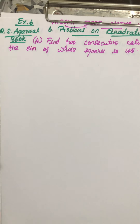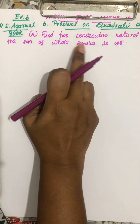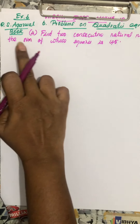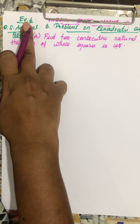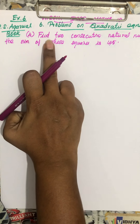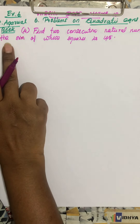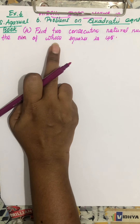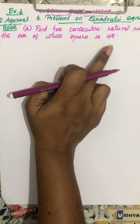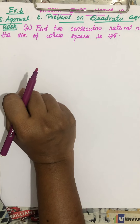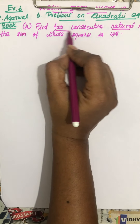Hi students, welcome — this is Vasha here. This is our sixth lesson on problems on quadratic equations. Question number four from our S. Aggarwal book, Exercise 6: find two consecutive natural numbers the sum of whose squares is 145.